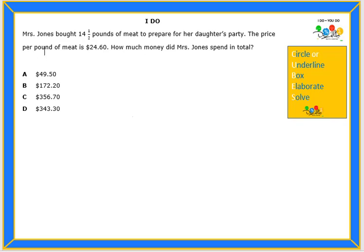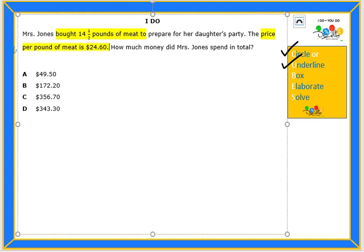On the right side of the screen you will see the CUBE strategies we will be using today. We will start with circle or underline key words, but if you prefer you can highlight. Bought 14.5 pounds of meat. Price per pound of meat is $24.60.